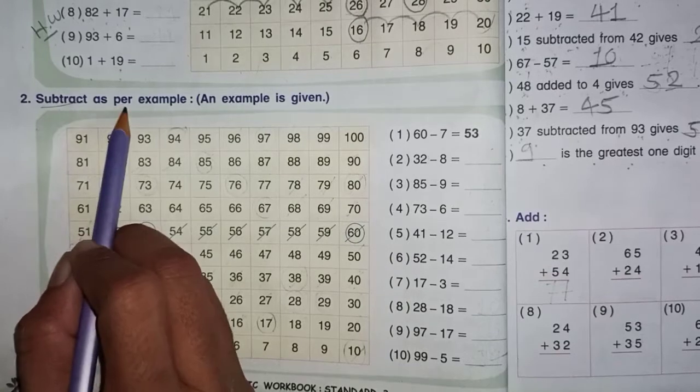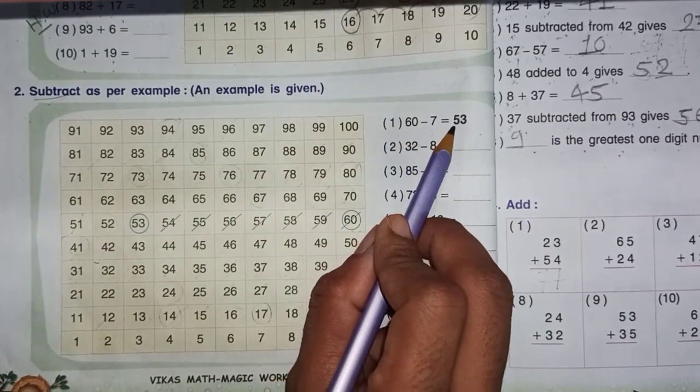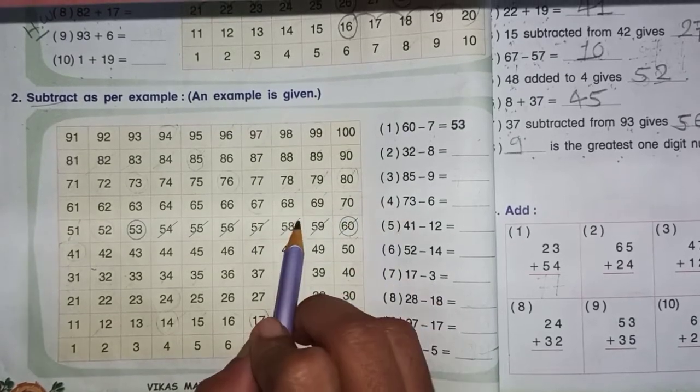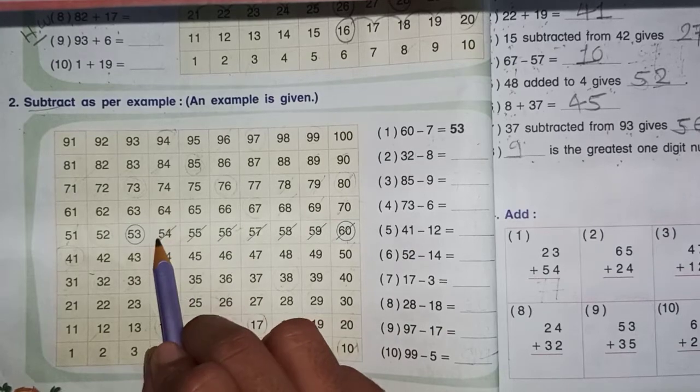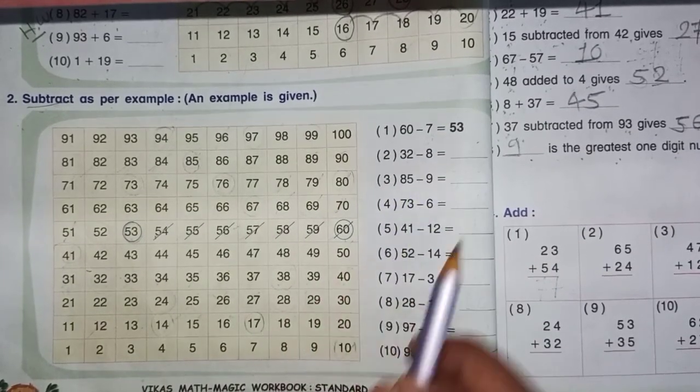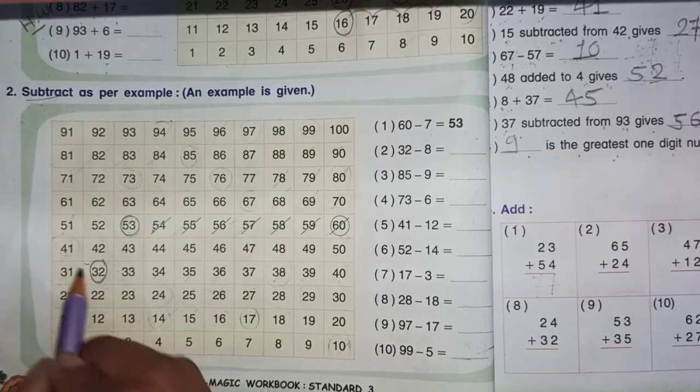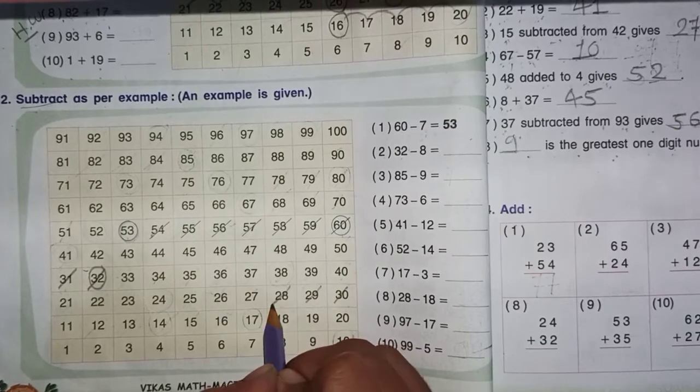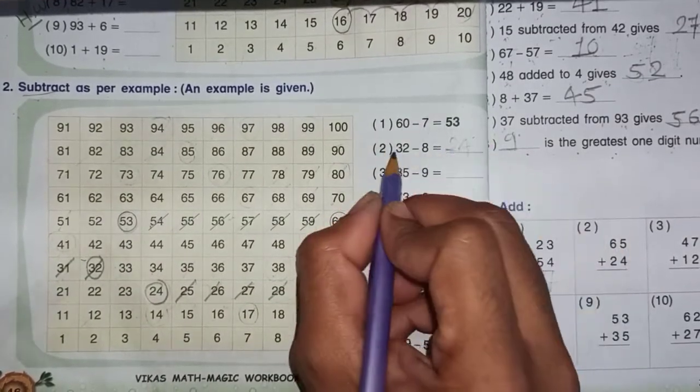Question second, subtract as per example. Counting backwards to find the answer. First, the answer is what we have given us.